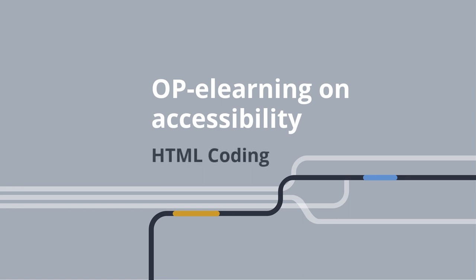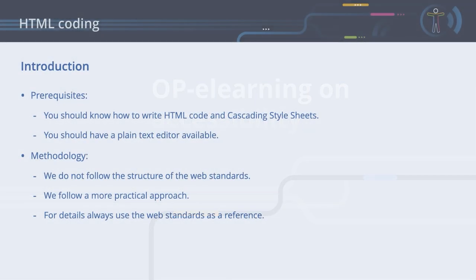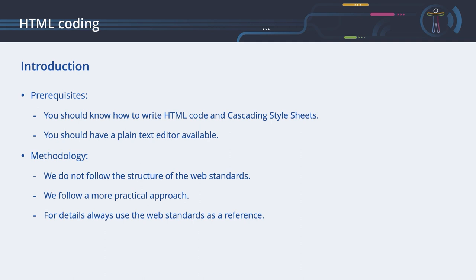HTML coding. In this chapter, you will learn how to code accessible web pages. Although you can follow this course without any technical knowledge, it is beneficial if you know how to write HTML code and cascading style sheets. To reproduce our examples, it is sufficient to use a basic plain text editor. What you see is what you get editors that create the HTML code for you are less advantageous, as you only have limited control over the code creation process.